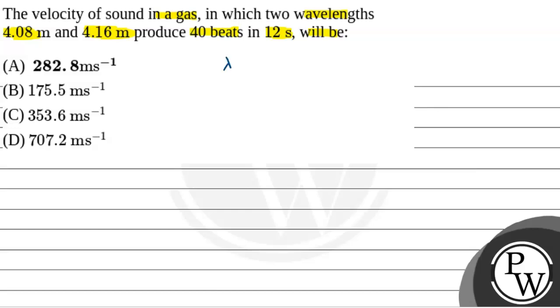The wavelengths given are lambda 1 equals 4.08 meter and lambda 2 equals 4.16 meter.